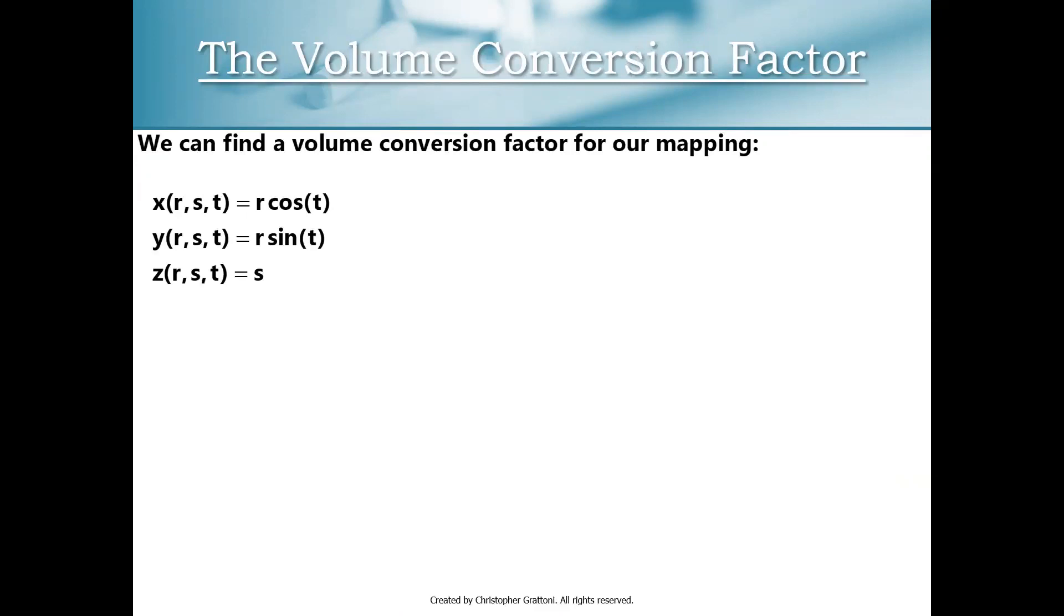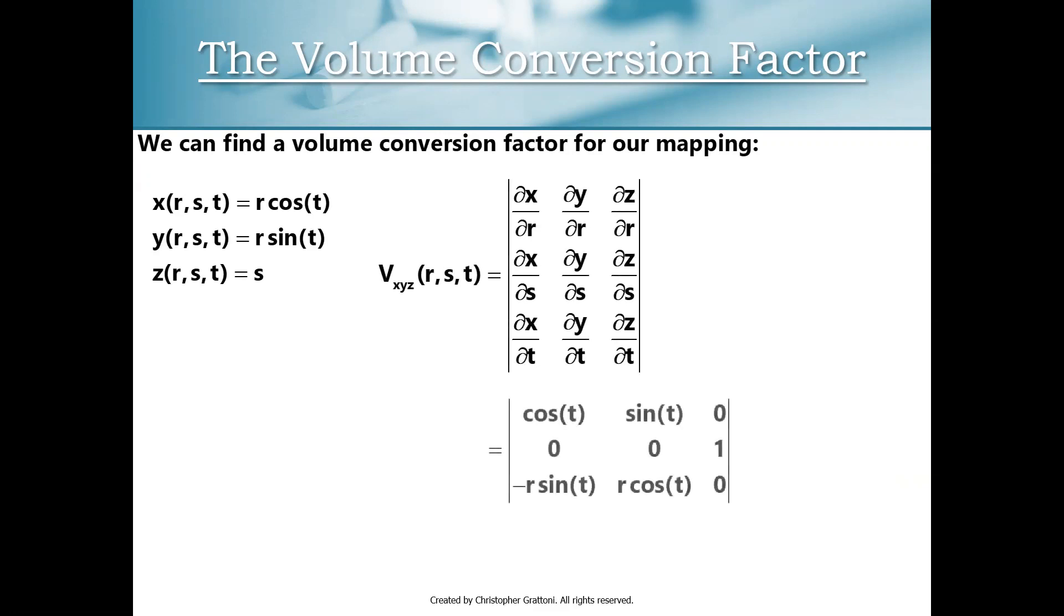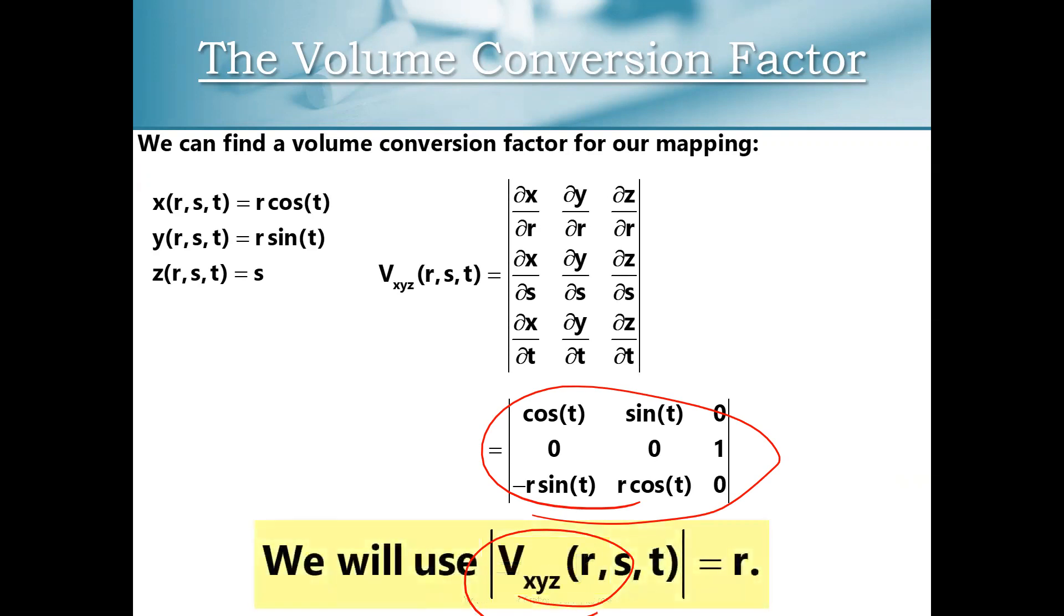Now, we've already seen how to compute the volume conversion factor for cylindrical coordinates, but just to remind you, you take your 3 by 3 determinant and then when you compute that 3 by 3 determinant, you do get negative R, but we're going to take the absolute value of that and use positive R. So we end up using the same Jacobian determinant that we used with polar coordinates. So you can treat it as if it's R for both polar and for cylindrical.